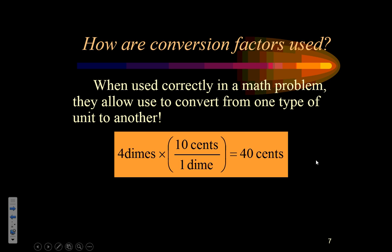So, when used correctly in a math problem, they allow us to convert from one type of unit to another. Case in point, this is a pretty way to write a dimensional analysis problem. Four dimes times our ratio of 10 cents over one dime. Dimes, top and bottom, they would cancel. And we'd be left in cents. So, four times 10 divided by one must give us how many pennies that would be. And in this case, it would be 40 cents.